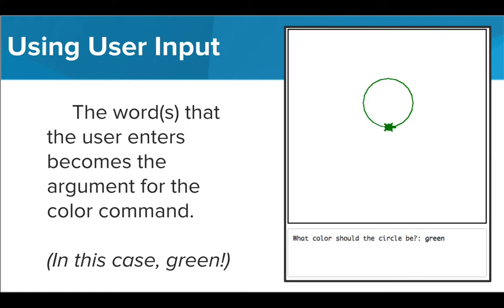When we run this code, the user will see the text prompt and will be able to type in an answer. The user's answer of green is given as an argument to the color command. Tracy then changes her color to green and draws the circle.